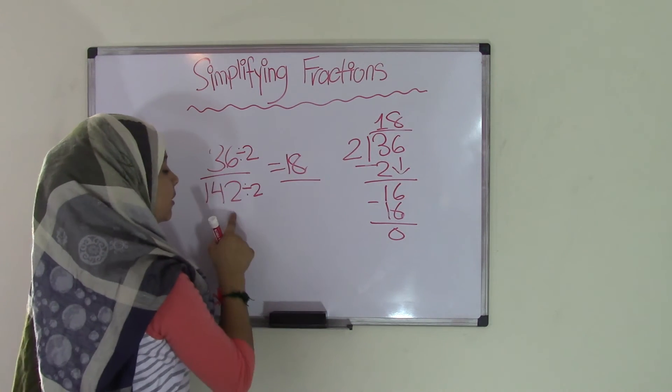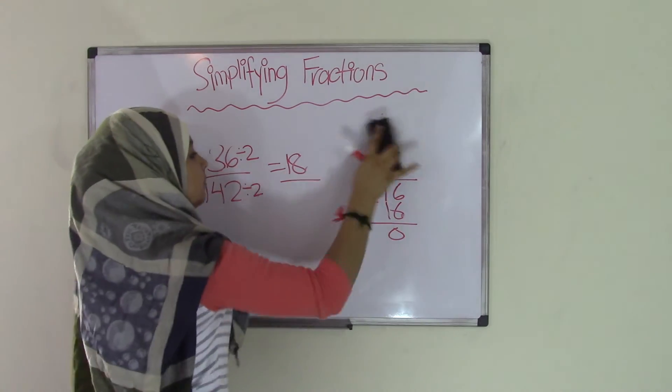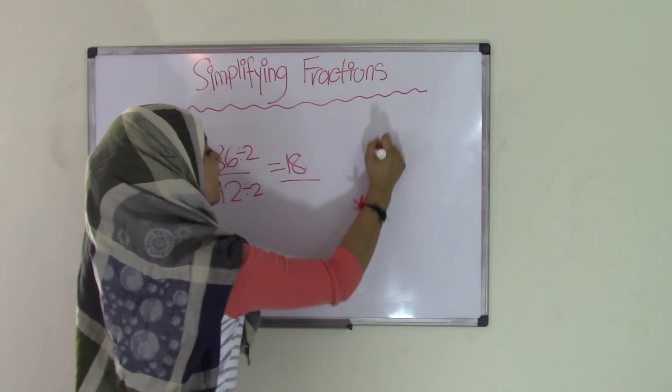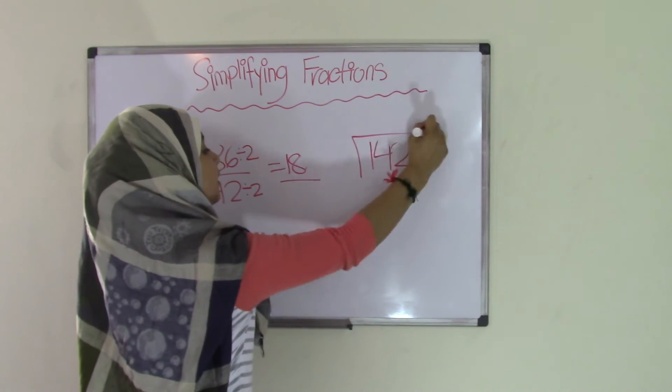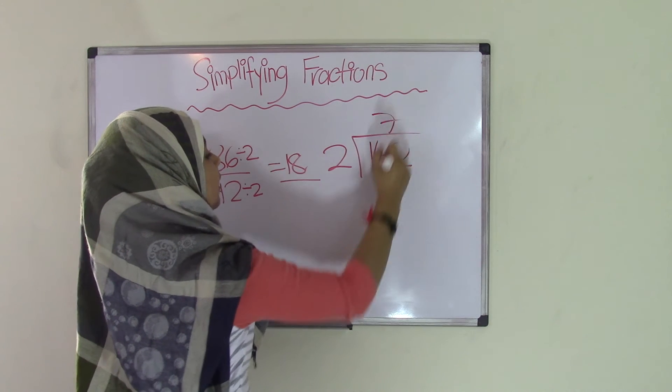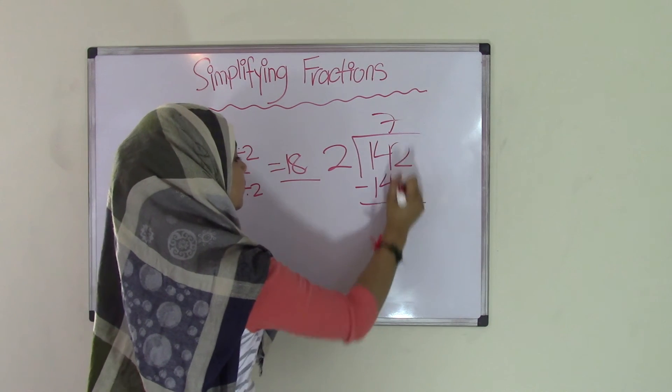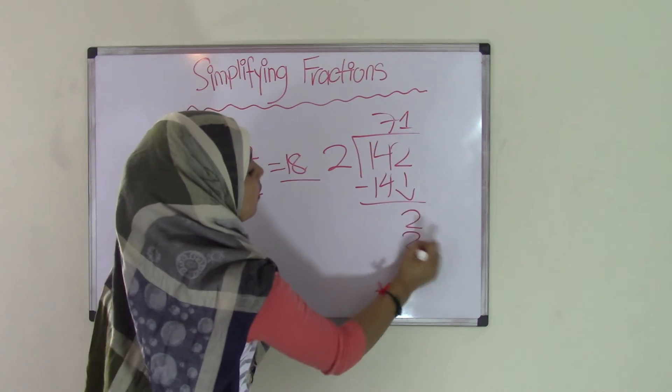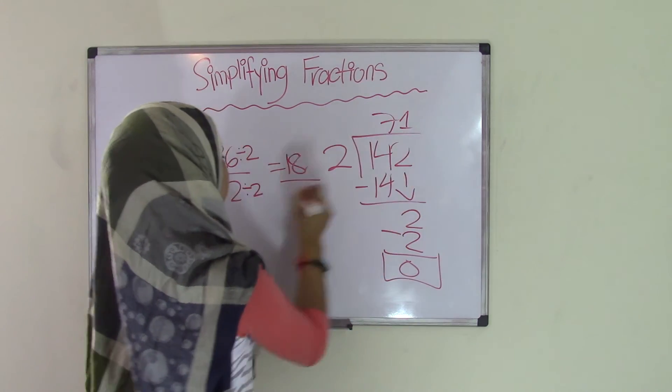So that's our numerator. Our denominator will be 142 divided by 2. So 2 goes into 14 7 times. Bring down the 2. 2 goes into 2 1 time. So our quotient is 71.